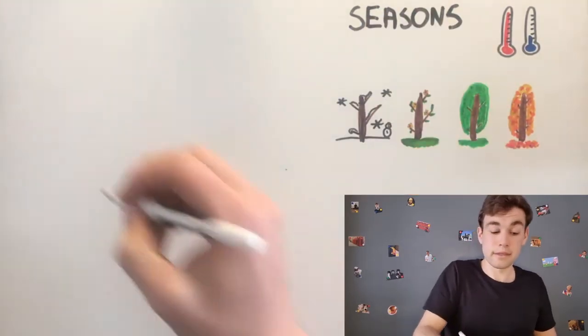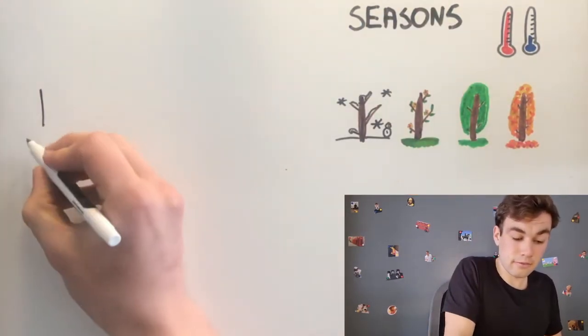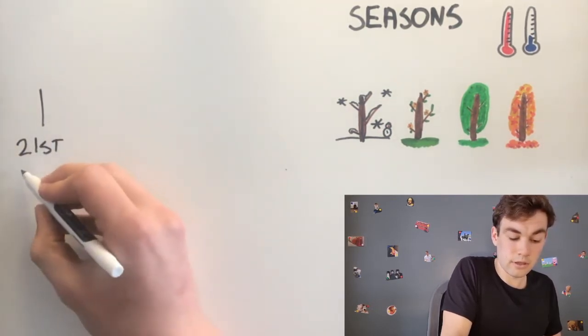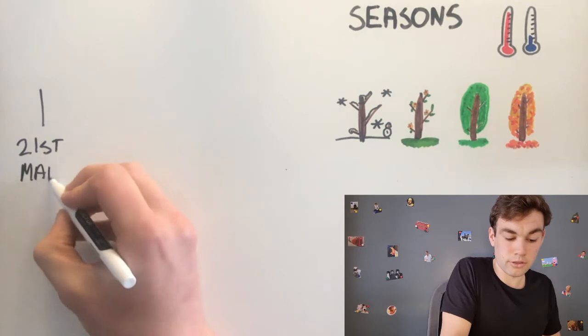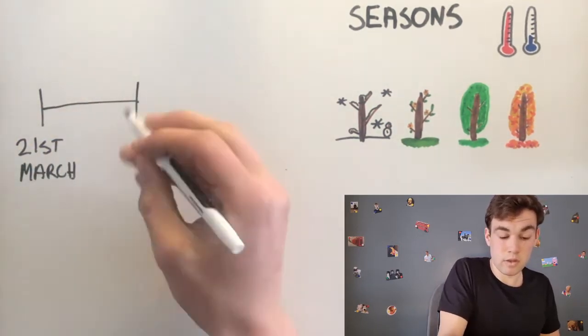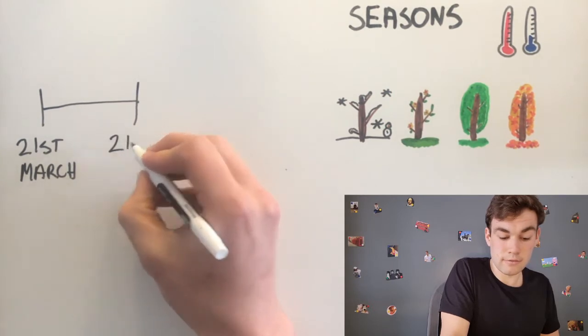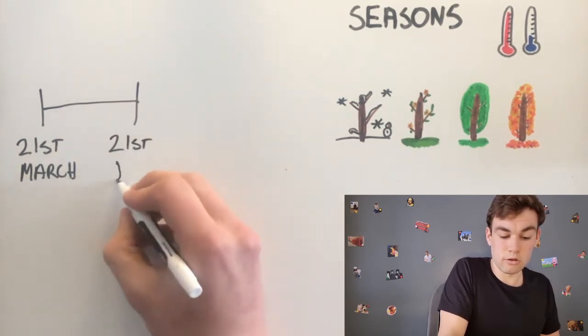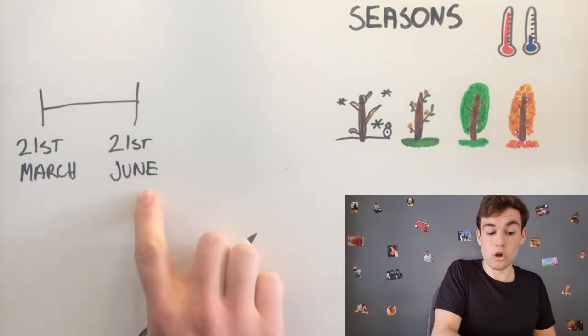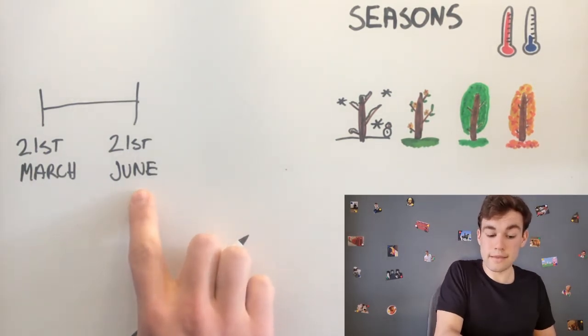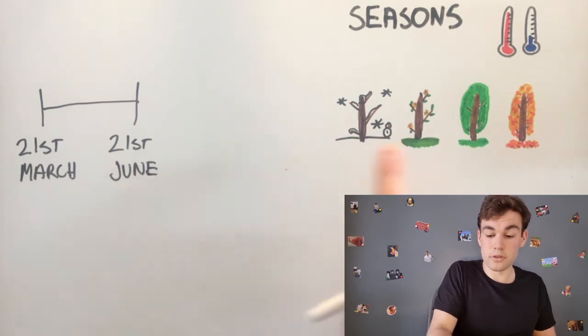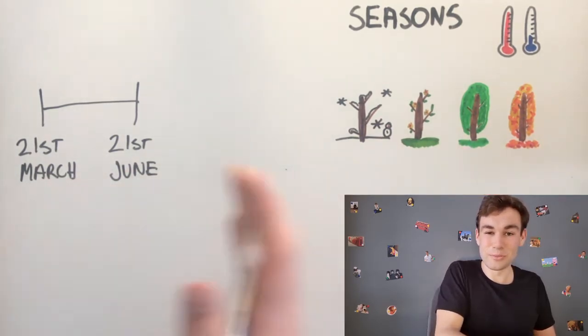Spring lasts from the 21st of March until the 21st of June. And on the 21st of June, the summer begins.